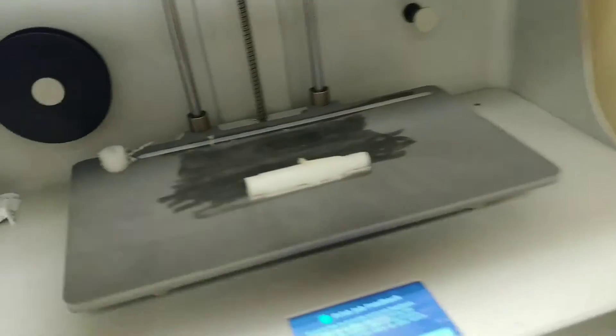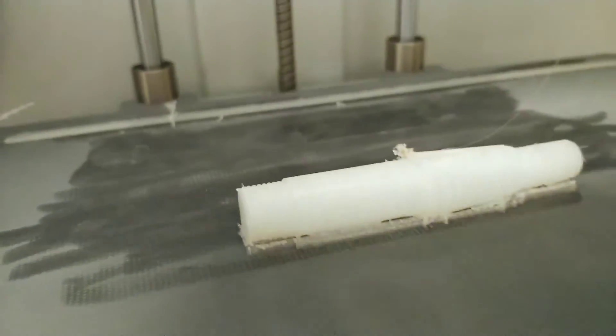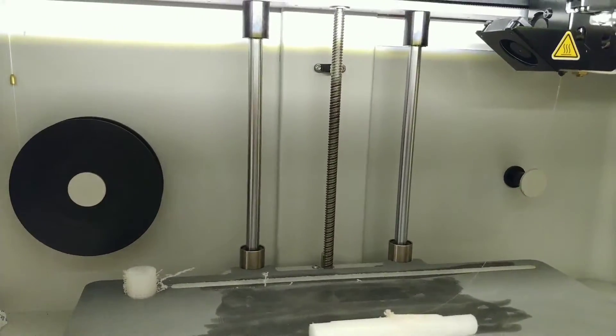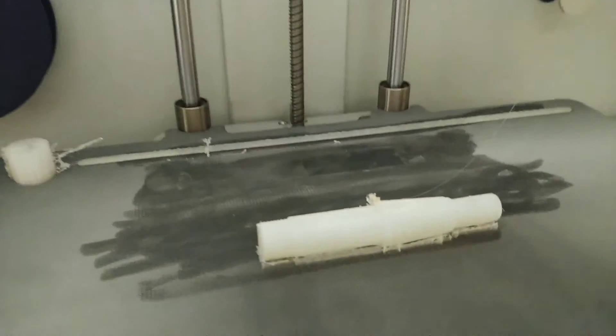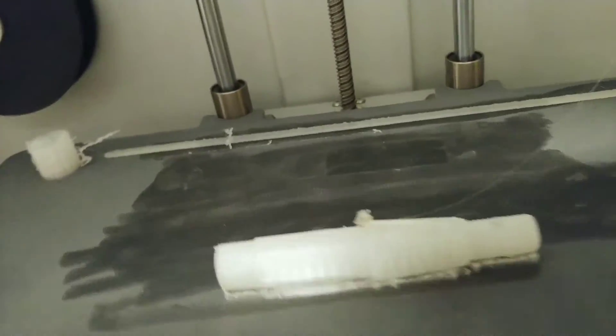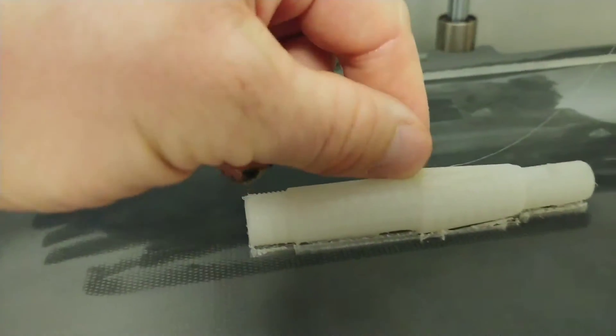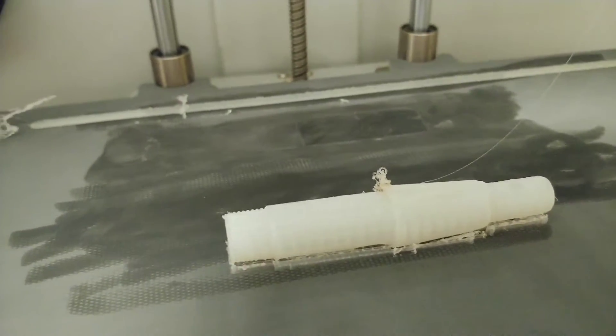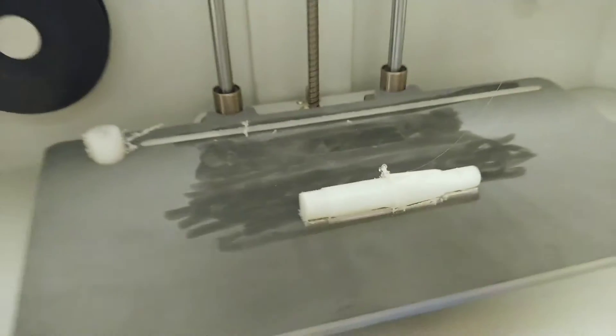We kind of had a rough start with it. Our first print here honestly wasn't too bad. This is a taper stud that's laid sideways. We're not going to get the best dimensional characteristics, but we were trying to figure out where the castle nut cotter pin should be, so I decided this would be a pretty good thing to print because we had a design change.